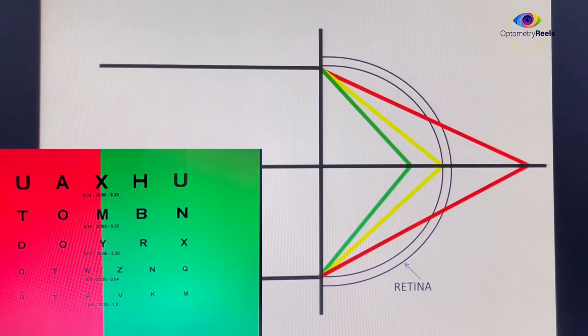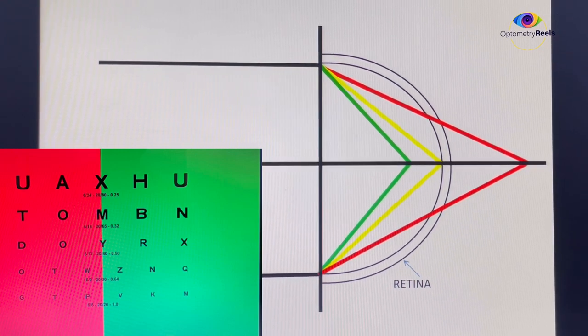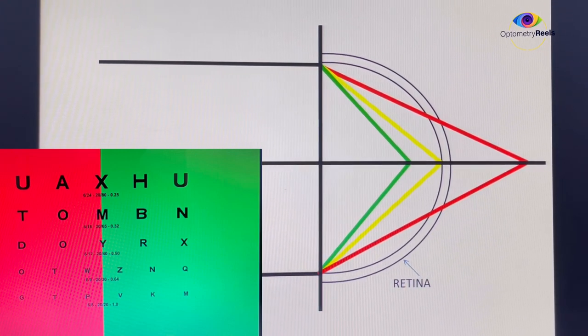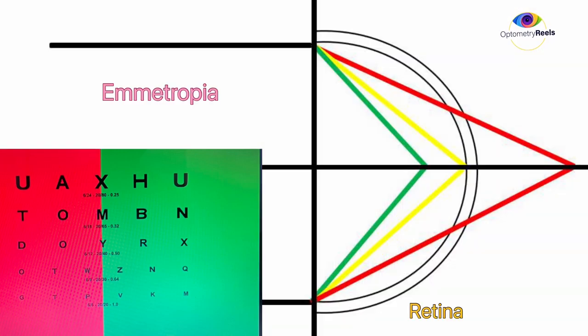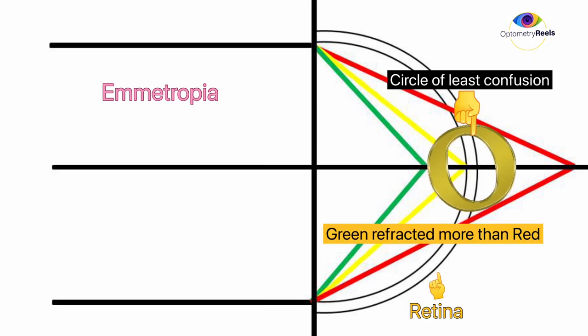In an emmetropic eye, the letters on both backgrounds of the Duochrome chart are equally clear, as the optics of the eye refract rays at equidistance from the retina to maintain the circle of least confusion. This is what we aim for even in myopic and hyperopic eyes with full correction.